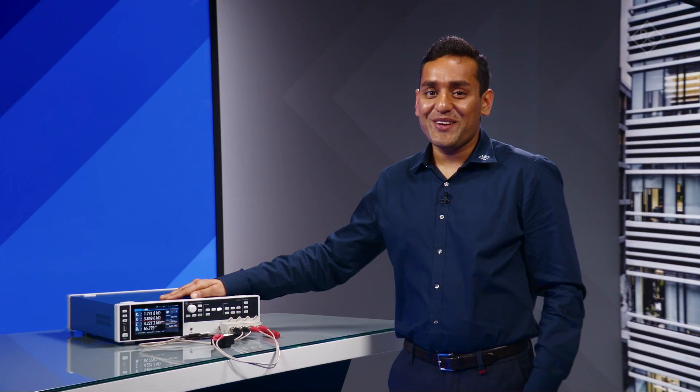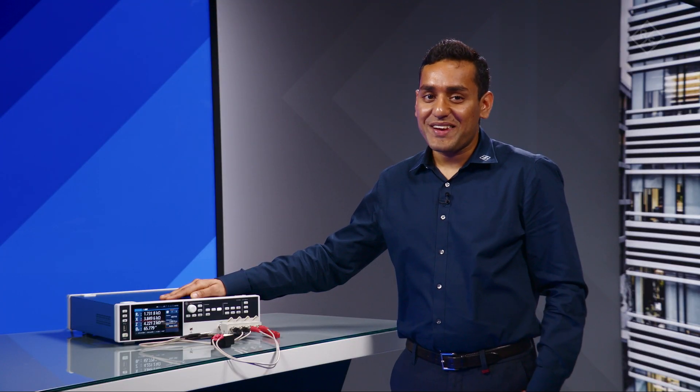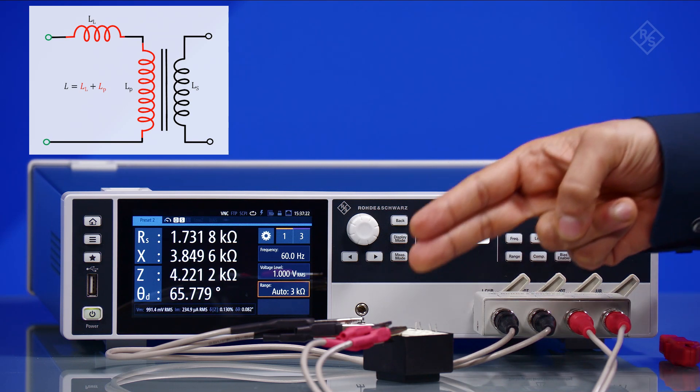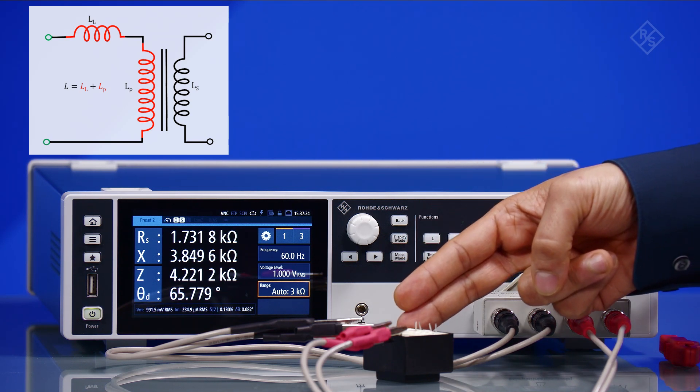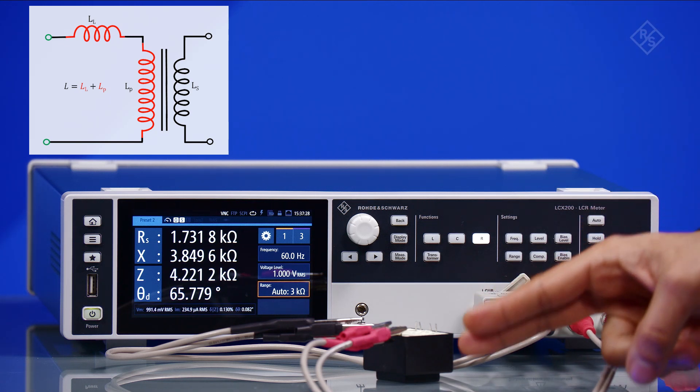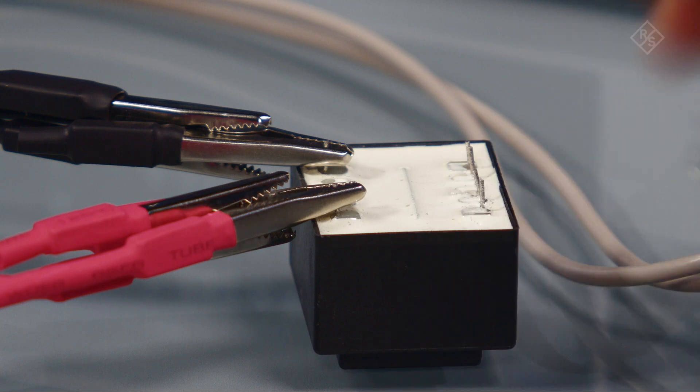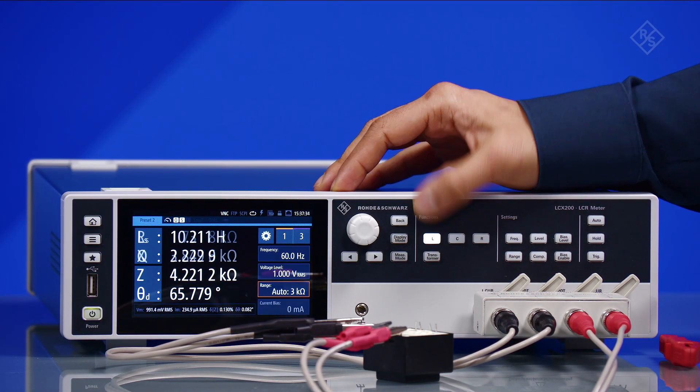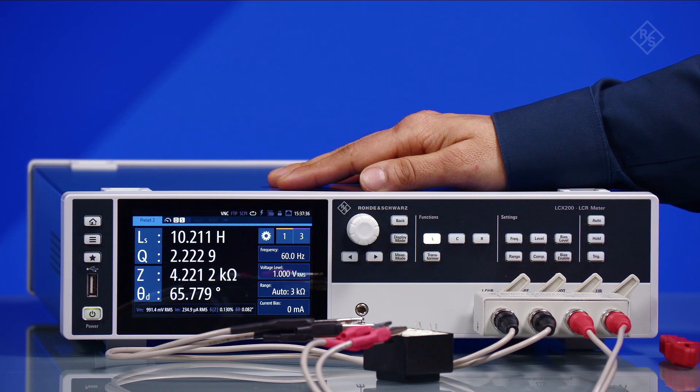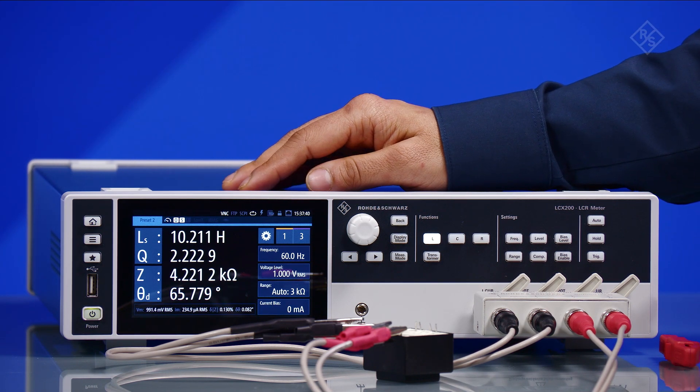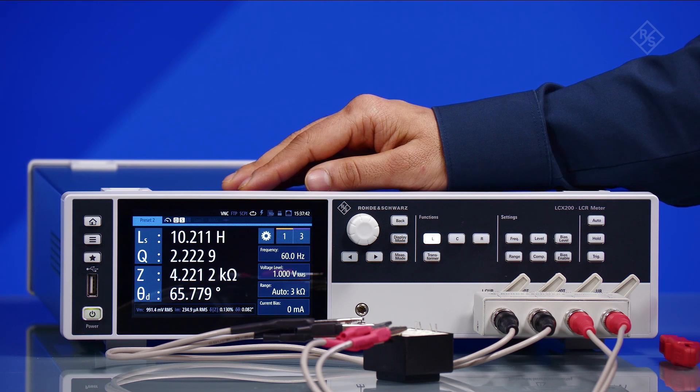In order to measure primary inductance, please connect the common test leads to one terminal of the primary winding, and connect the one and N test leads to the other terminal of the primary winding. Leave the secondary winding open and press the L key. The high resolution screen of the LCX now displays the primary inductance of this transformer.